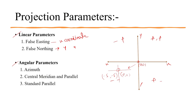For angular parameters, there are azimuth, central meridian, central parallel, and standard parallel. Azimuth is an angular measurement in a compass from north on a map. The central meridian is the central line present on the earth's surface — it's an imaginary line we discussed in our previous lecture. Standard parallel was also discussed in our last lecture, so please go to that lecture to learn about central meridian, central parallel, and standard parallel.